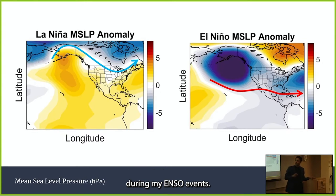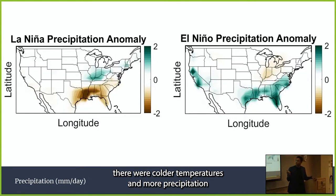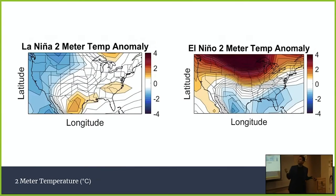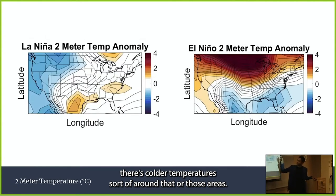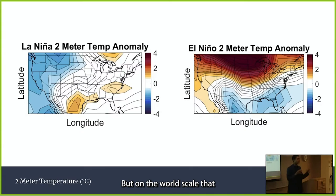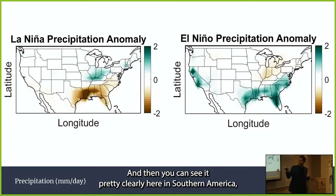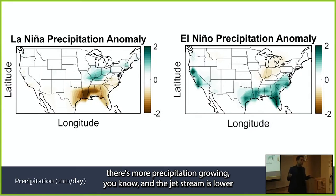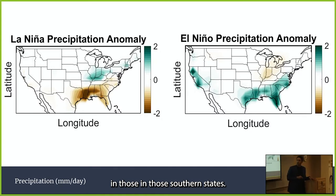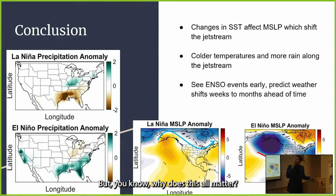What I found was that along these jet streams, there were colder temperatures and more precipitation. During El Niño, jet streams appear close to southern America, and during La Niña, they shift toward northern America. You can see colder temperatures around those areas. On the precipitation maps, there's more precipitation in southern America during El Niño — while La Niña shows more precipitation in Canada and drier conditions across the southern United States.